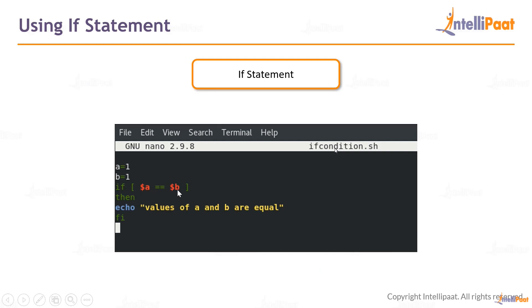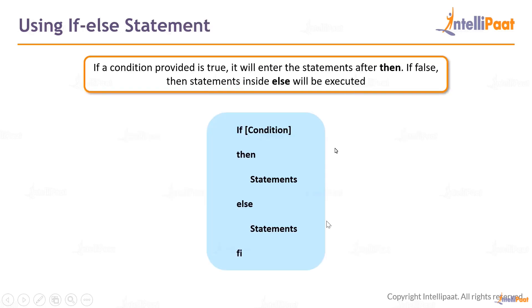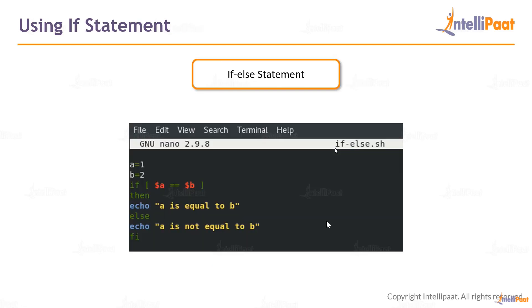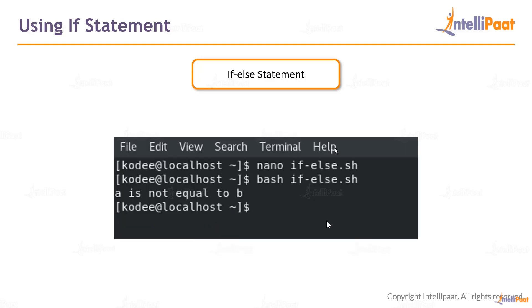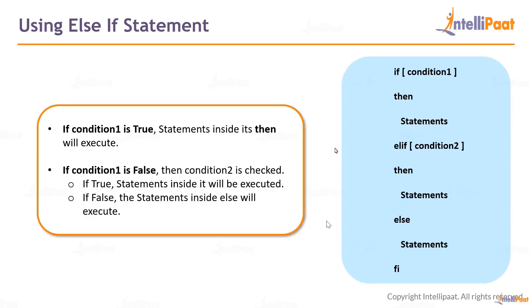For instance, if a and b are not equal, you want to print 'values of a and b are not equal' — you can use if-else for that. With a=1 and b=2, if we check a==b, they are obviously not equal since two is larger than one. So the else branch executes and 'a is not equal to b' will be printed. I've executed it and you can see that outcome.